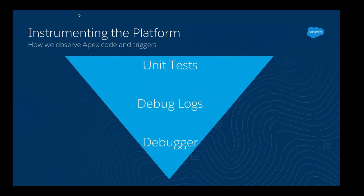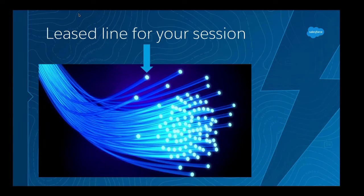The Apex real-time debugger is the ability to stop a request and follow its execution without needing to know ahead of time where it's going to land. This is a bit different from traditional Java or C-sharp development, because we can't give you an entire instance or runtime of Salesforce on your local machine. Apex code is deployed into the cloud and compiled in the cloud, so we need to provide you an environment where you can stop and trace these things.